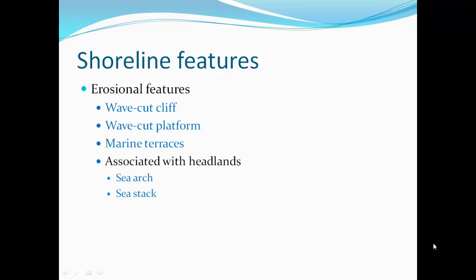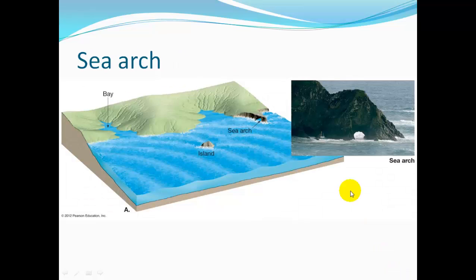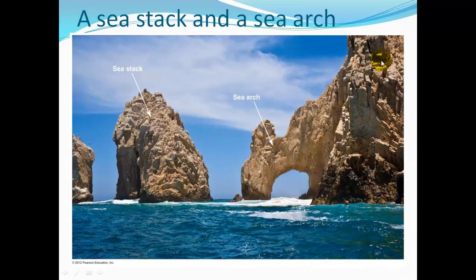Erosional features caused by waves include wave-cut cliffs, wave-cut platforms, and marine terraces. Also associated with headlands, we'll have sea arches and sea stacks. As a headland is beaten by waves, a weaker part may erode through to form a sea arch. Further erosion breaks the arch, leaving a sea stack. A nearby island was probably once connected to the shoreline, but wave action eroded the land in between. A sea arch that fully erodes through will eventually leave behind a sea stack.